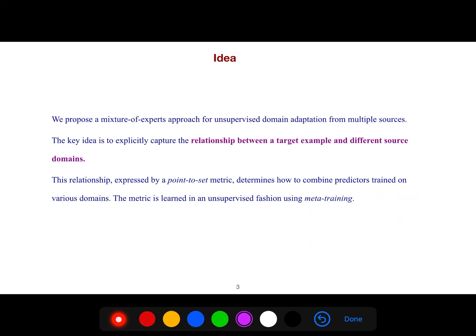We propose a mixture of experts approach for unsupervised domain adaptation from multiple sources. The key idea is to explicitly capture the relationship between a target example and different source domains. This relationship is expressed by a point-to-set metric.